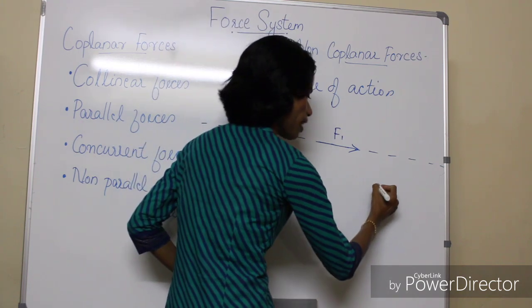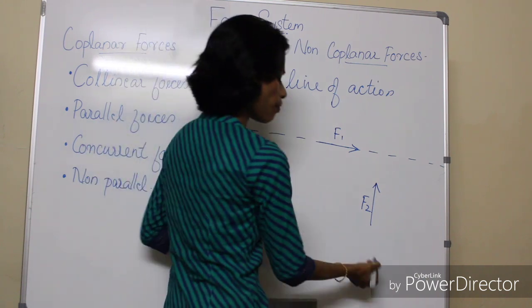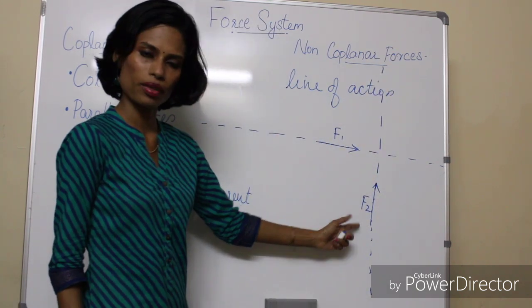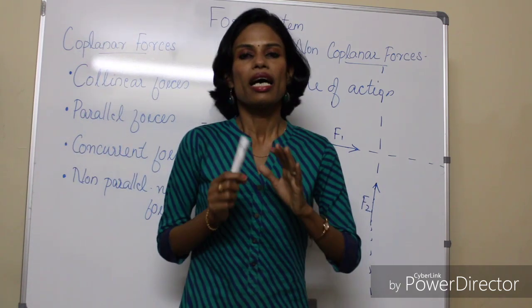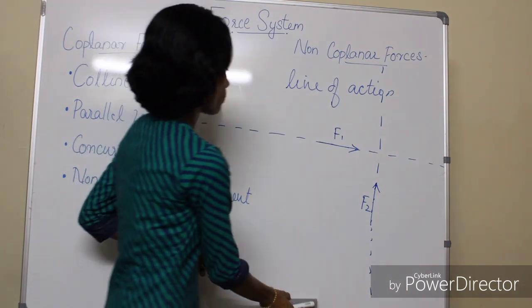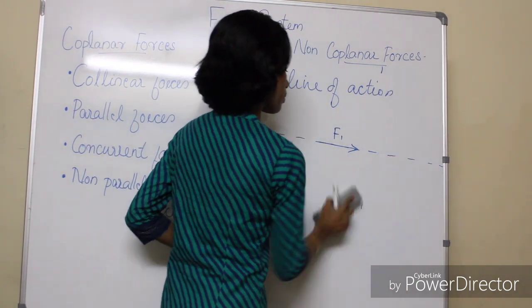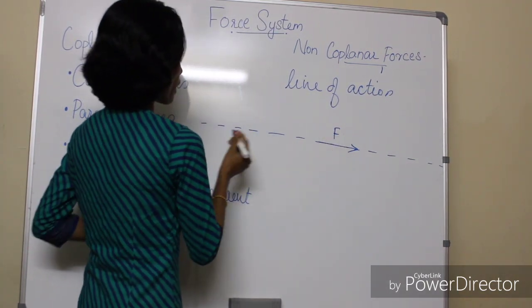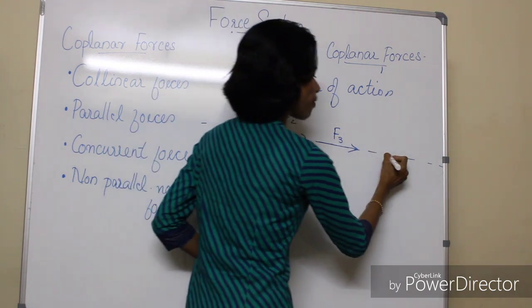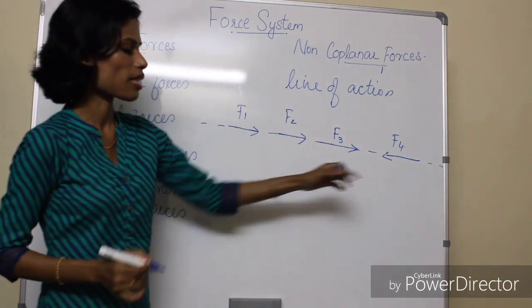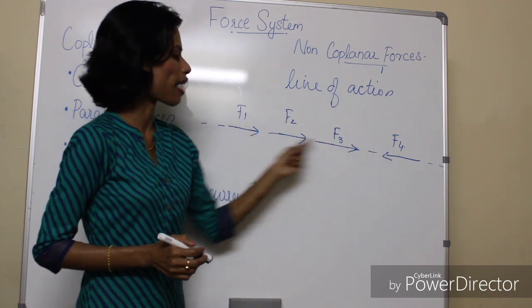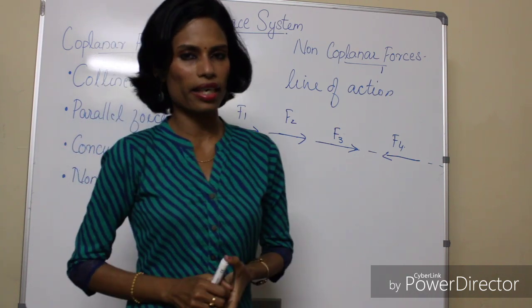This is the line of action of F2. Now, collinear forces are forces which have the same line of action. Here there is one force F1, another force F2, F3, and another force F4. The lines of action of all these four forces lie on the same line — F1, F2, F3, F4 all have the same line of action. So forces which have the same line of action are known as collinear forces.